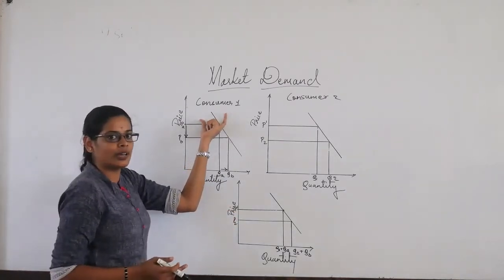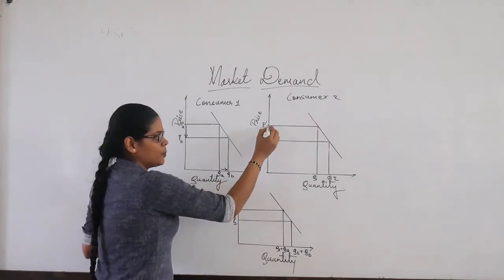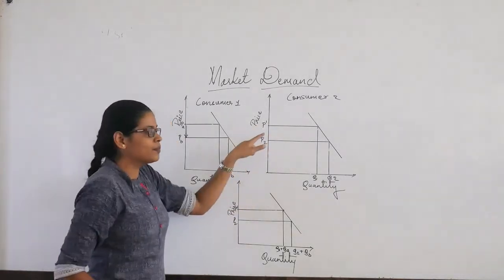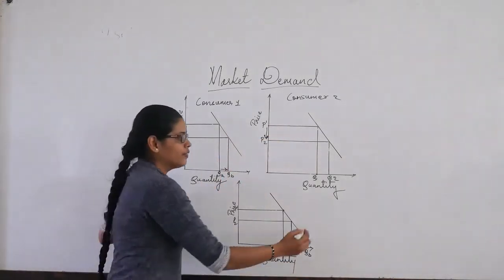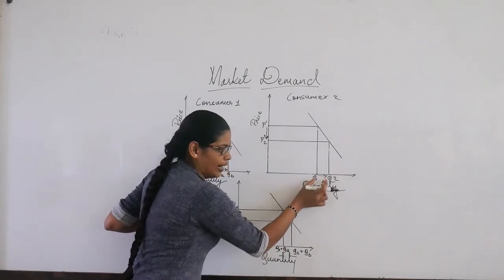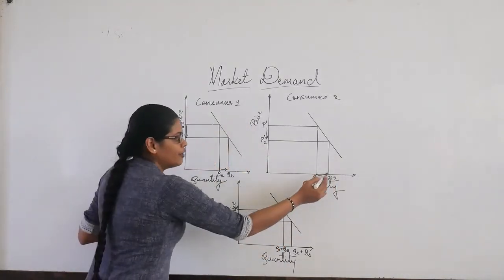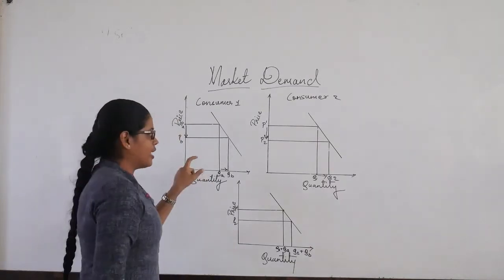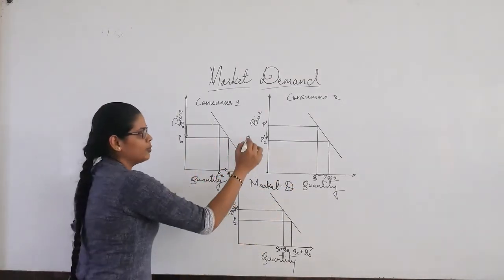This is the case of consumer 1. When we have consumer 2, the market has so many consumers, and the behavior of consumer 2 is similar: when the price is at P1, the quantity demanded is at Q1, but when the price decreases from P1 to P2, the demand for that commodity increases. So the quantity demanded when price falls to P2 is at QB. When we talk about these two consumers, there should be a market demand curve, which we derive by adding consumer 1 plus consumer 2.